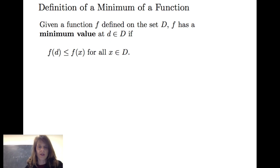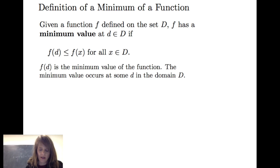The definition of a minimum of a function is similar. Given a function f defined on set D, f has a minimum value at a point D in this set D, if f of D is less than or equal to f of x for all x in D. And f of D is the minimum value of the function.